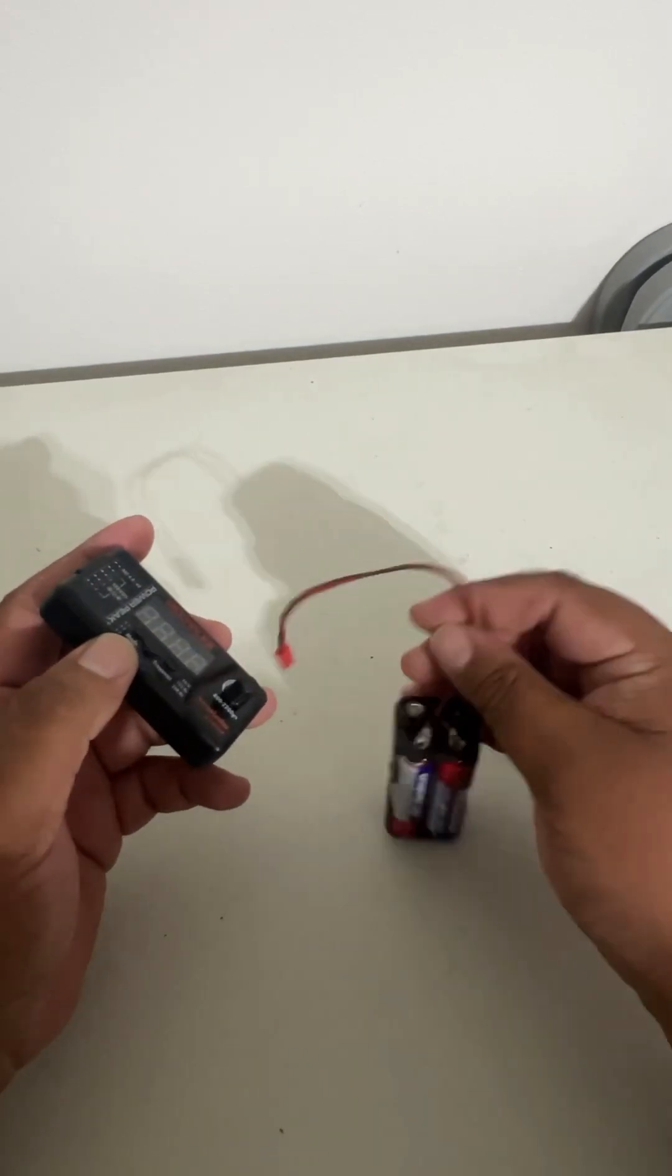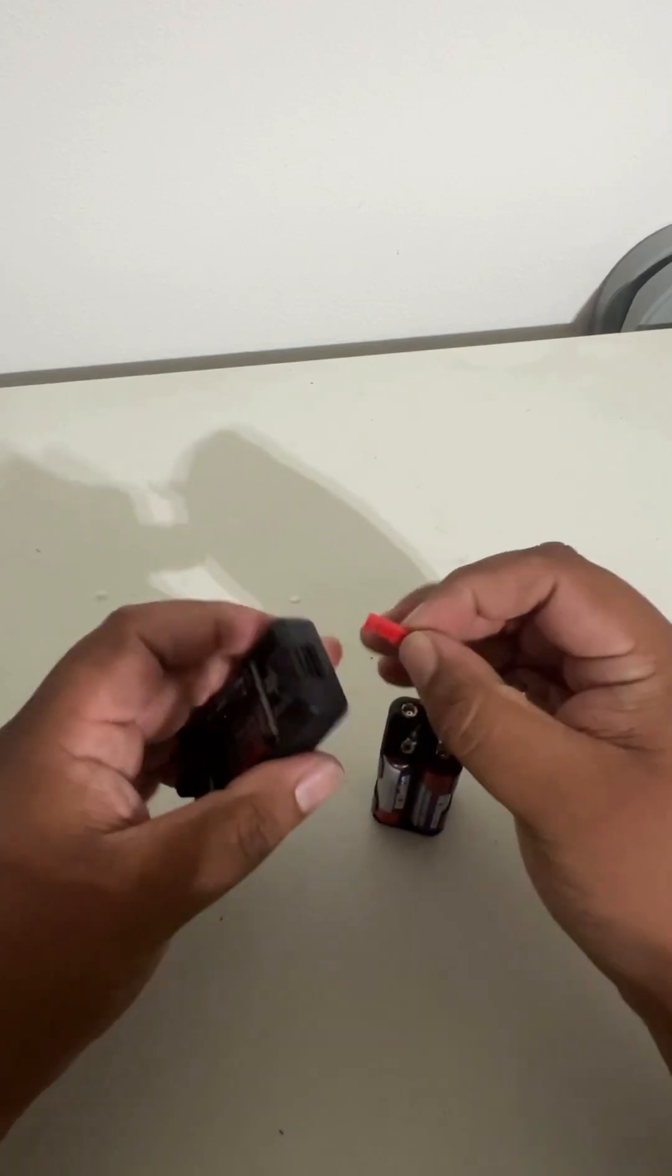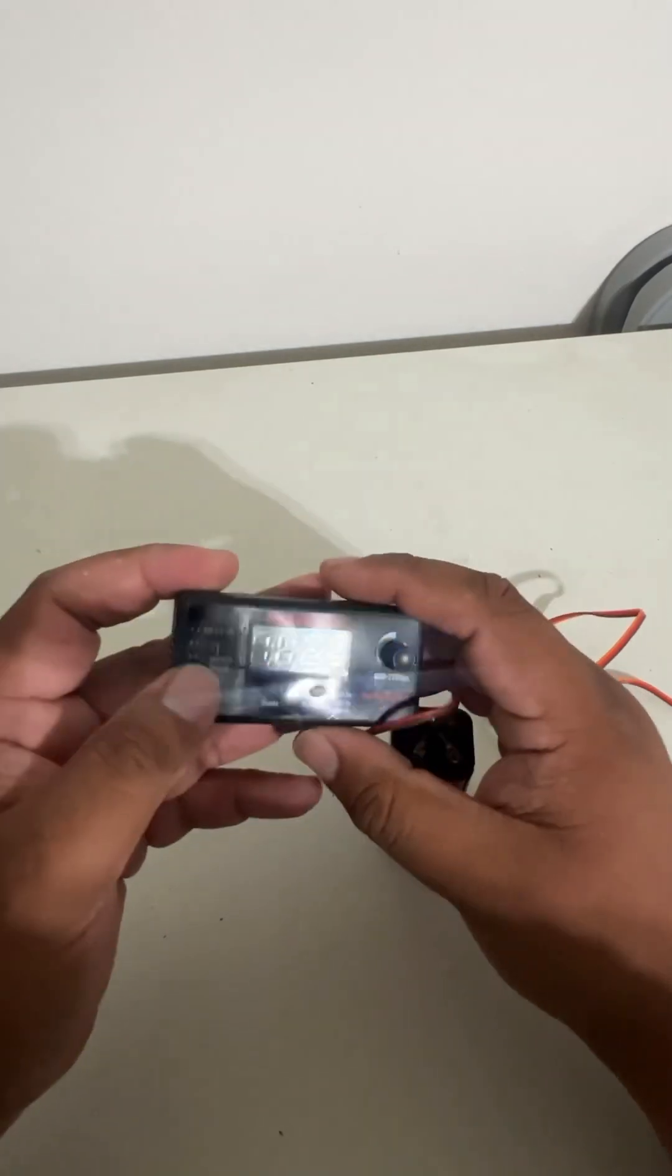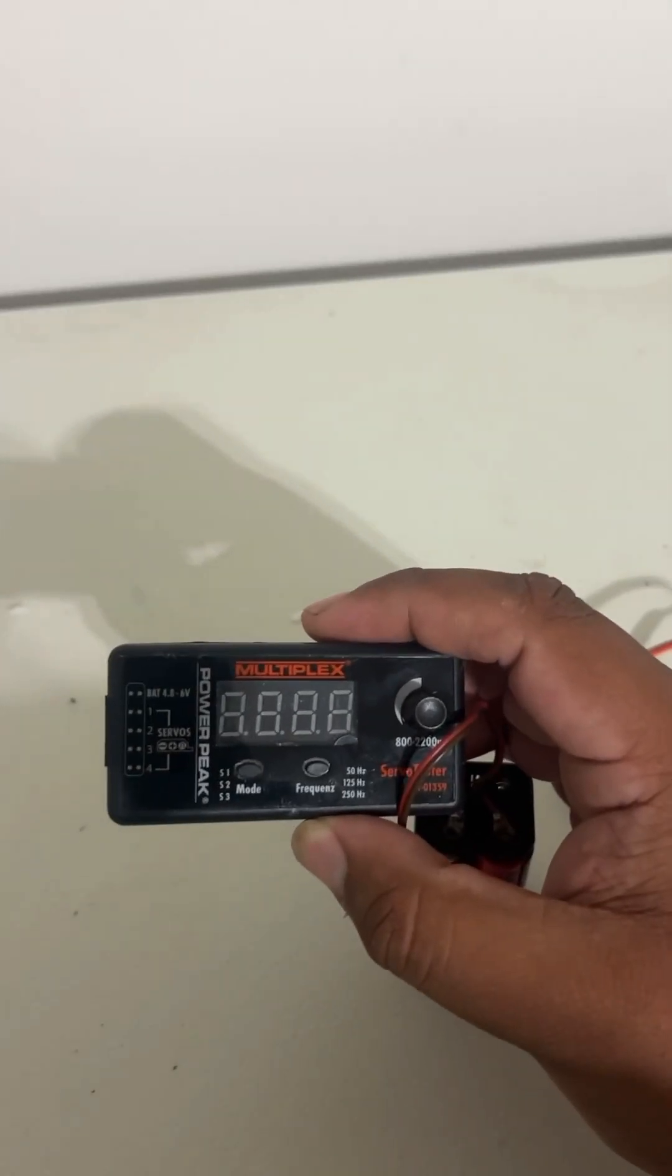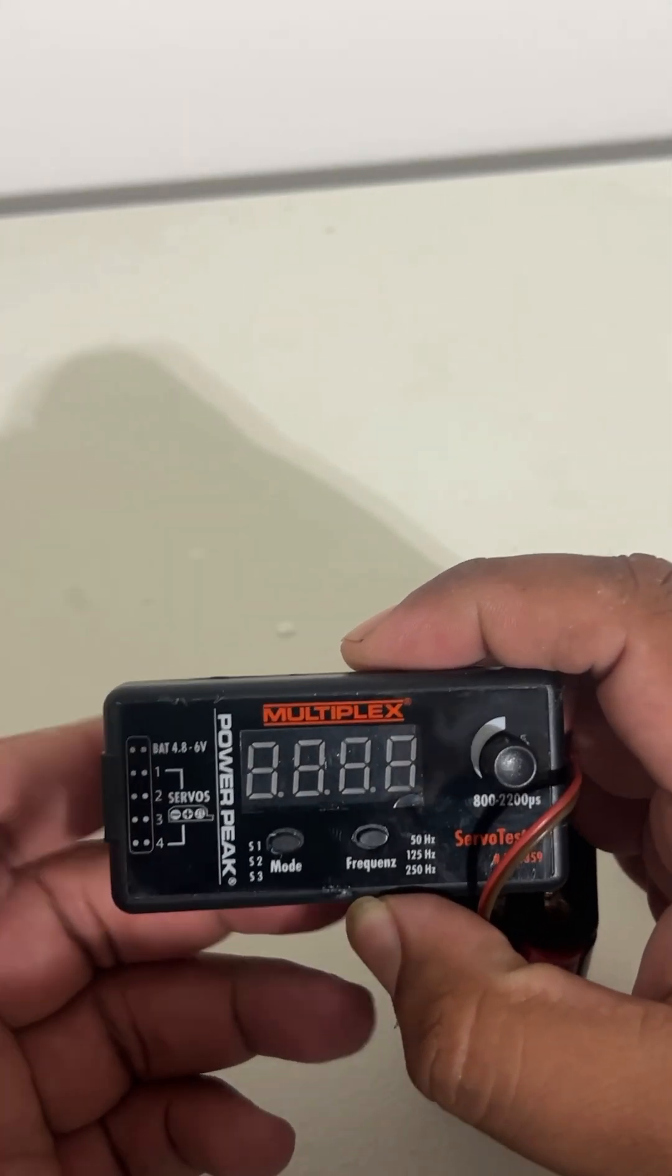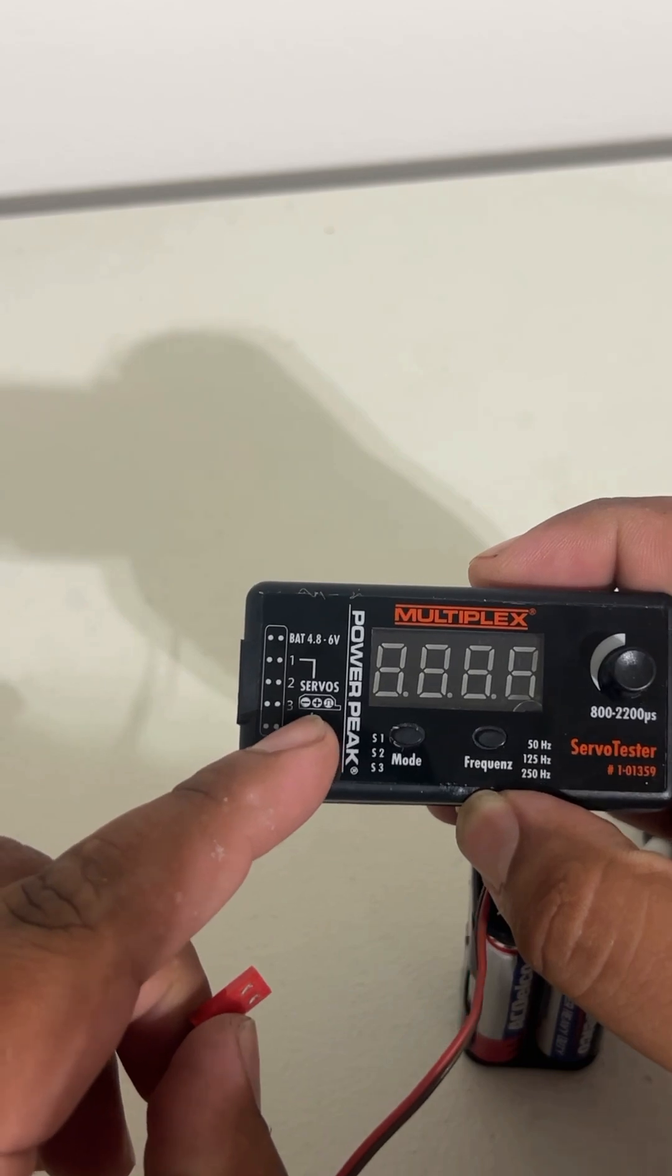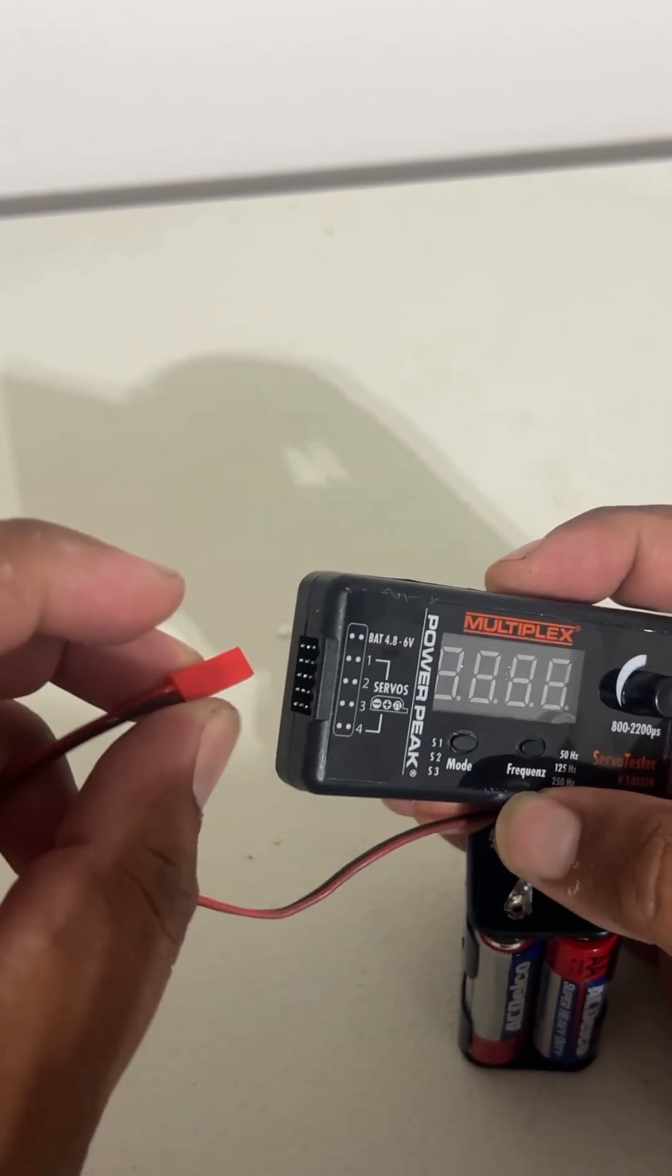You're gonna go ahead and look at your servo tester, and you're going to look at this right here. See how there's an option that says battery on top where you're going to plug in, just like this symbol says right here: negative, positive, and then signal. So we're going to put the negative and positive at the farthest end.